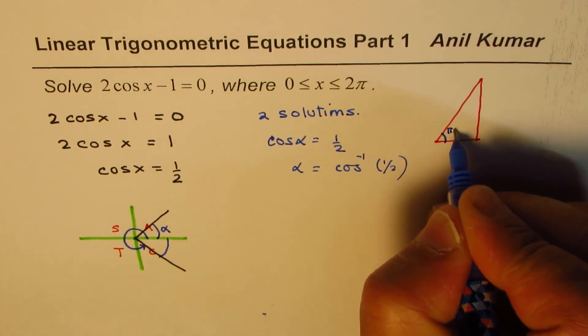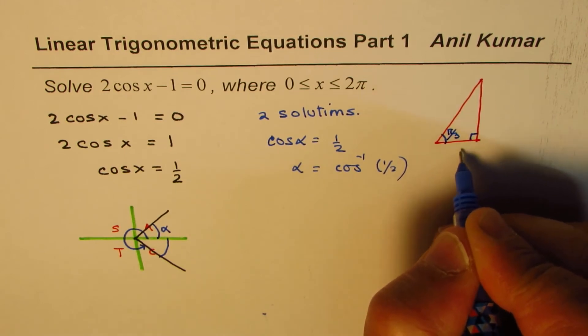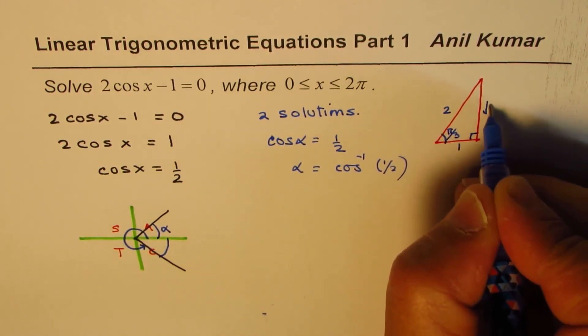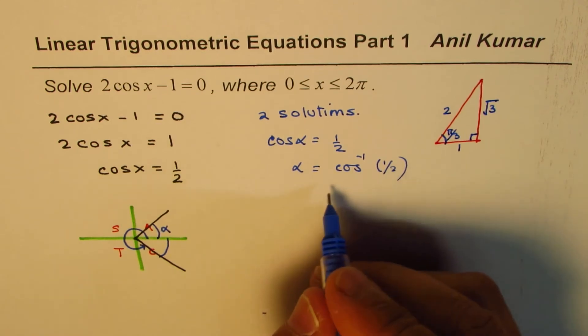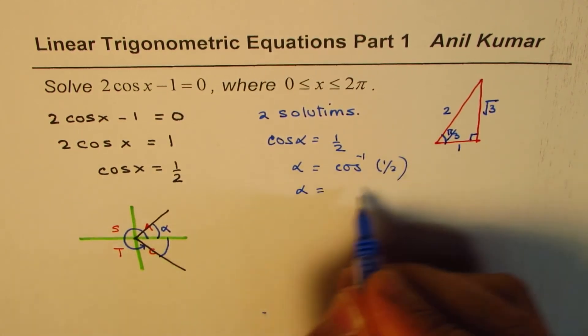So in special triangles we know the one where π/3 really works for us. If I have this angle as π/3 in the right triangle, this side is 1, that is 2, this is square root of 3. So we know α is π/3.